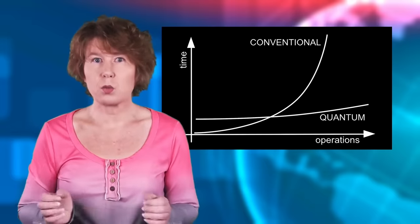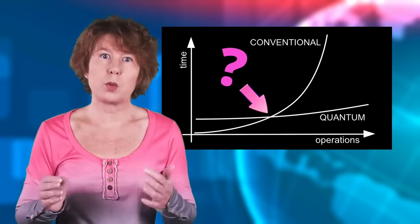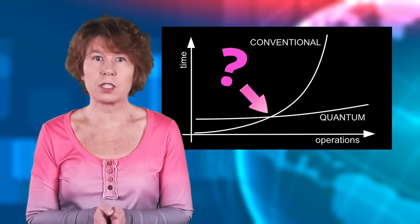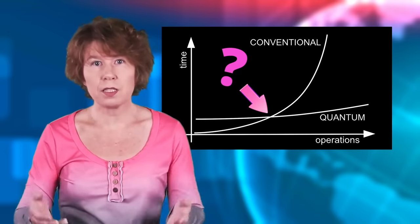In practice, the question is where this crossover happens, where the quantum computer starts to outperform the conventional one. That's a moving target.